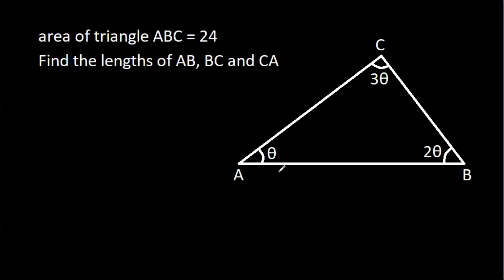In this video, we have been given that angle A is theta, angle B is 2 theta, and angle C is 3 theta, and the area of triangle ABC is 24. Then we have to find AB, BC, and CA.